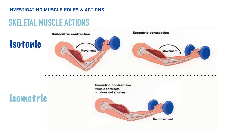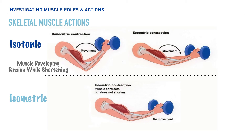With isotonic contractions, we have two terms that you may very well be familiar with. The first is concentric, and the second is eccentric. For both of these types of contractions, the muscle is developing an internal tension to cause or control joint movement. But specifically with concentric contractions, the muscle is developing tension as it shortens. And in eccentric contractions, the muscle is lengthening under active tension.